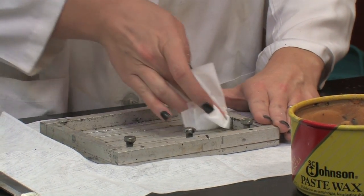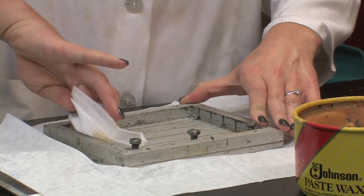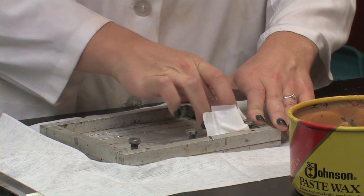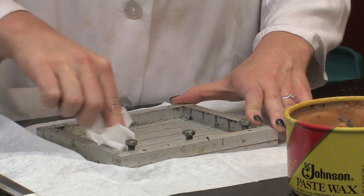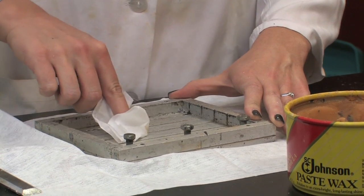Apply a thin layer of the wax all over the mold, on the walls, in the corners, and in the ridges. Avoid any buildup of wax though. You just want a thin layer to coat it.